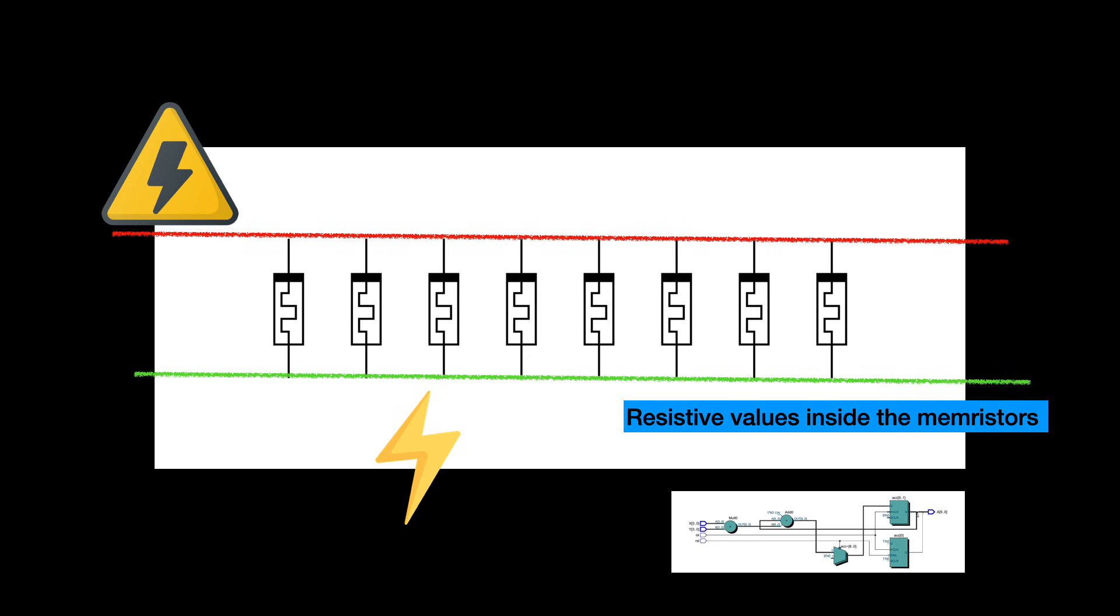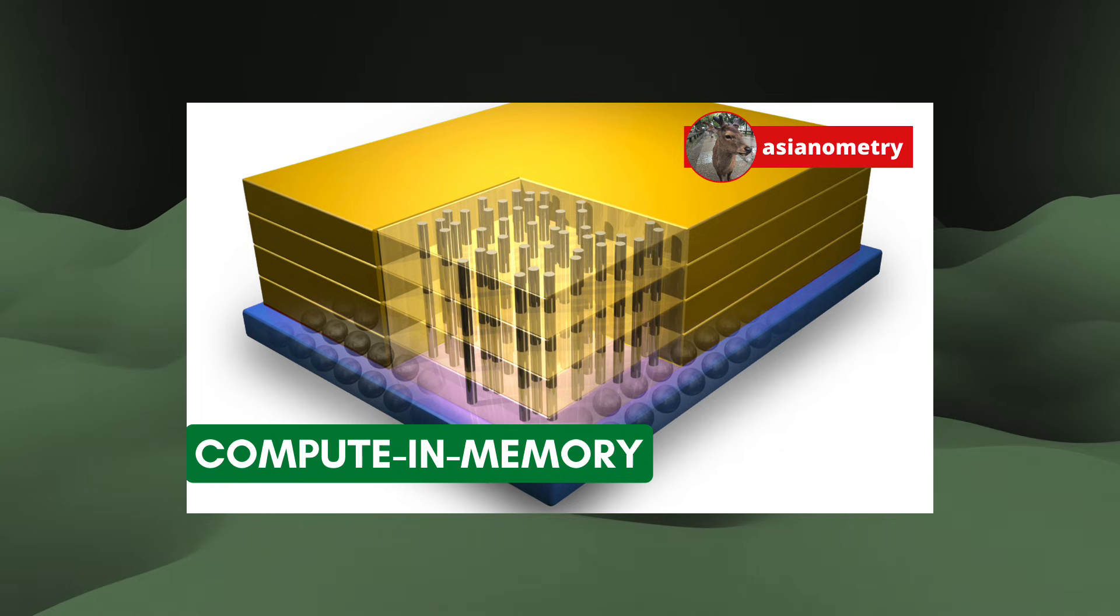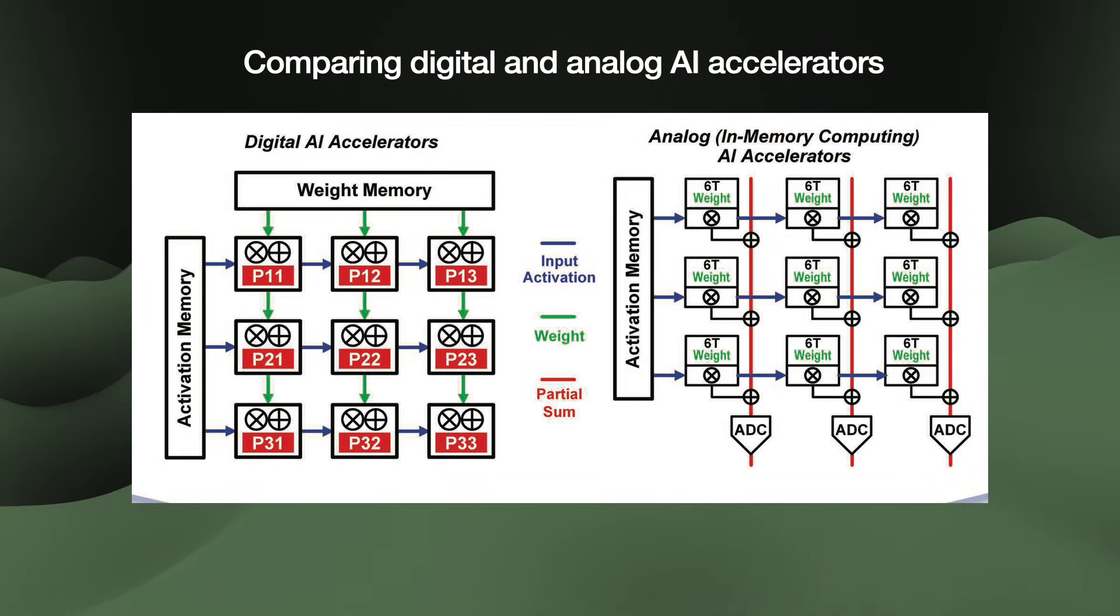Because we perform all the matrix multiplication calculations right inside the memory cells where the parameters are stored, we call this compute-in-memory. It skips right over the power and latency issues associated with the von Neumann bottleneck. We do a whole round of vector matrix multiplication operations in a single low-power step. We save a lot of time and energy against existing digital AI accelerators.